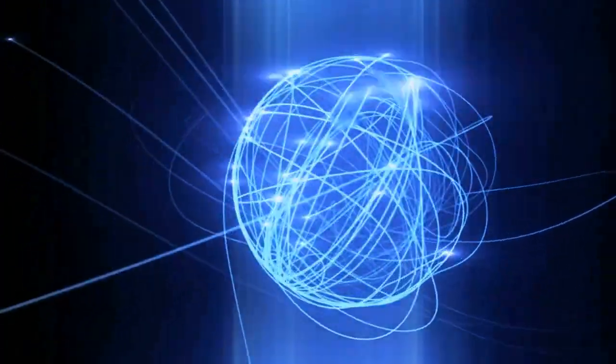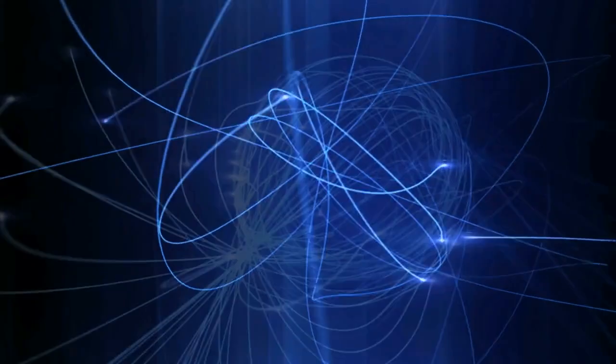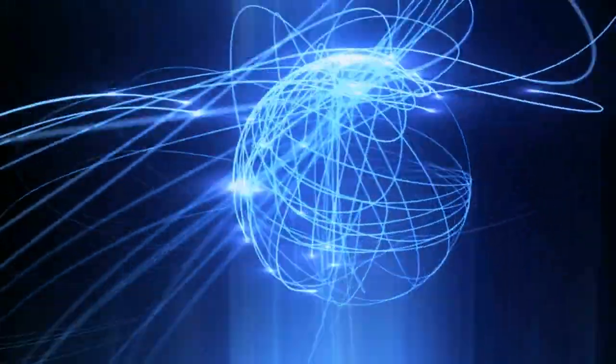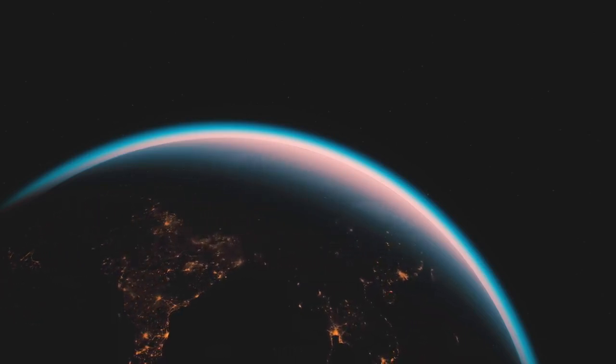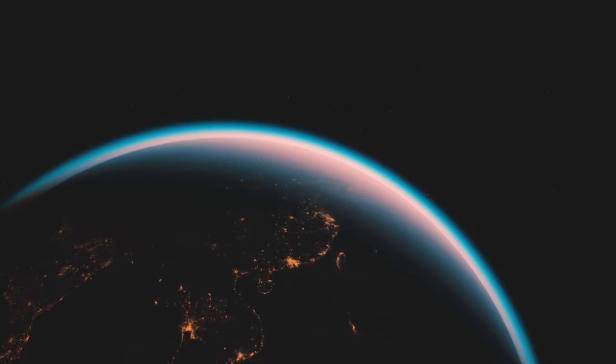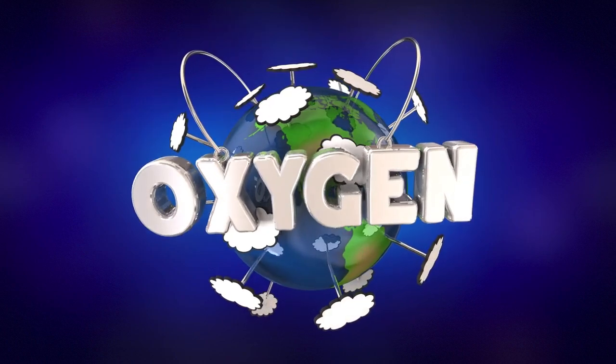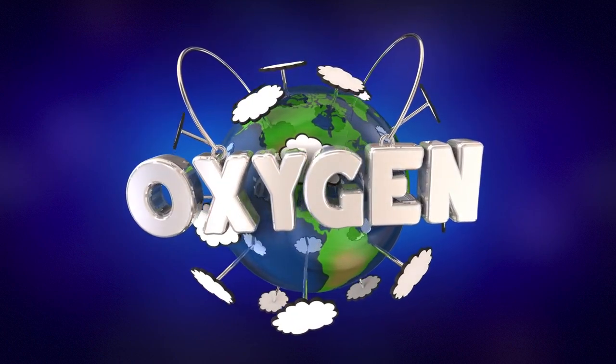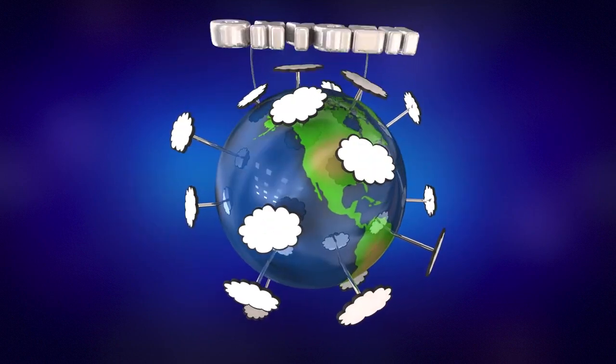If Earth were struck directly by the beam of a gamma-ray burst, the planet's ozone layer would be obliterated almost instantly. Without the protective shield of the ozone layer, the surface of Earth would be exposed to lethal levels of ultraviolet radiation from the Sun. This would trigger a chain reaction of catastrophic events, including mass extinctions, climate shifts, and widespread ecosystem collapse.